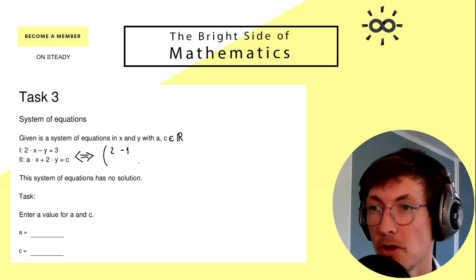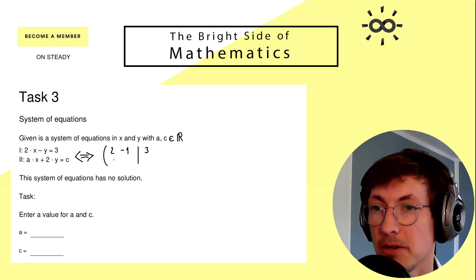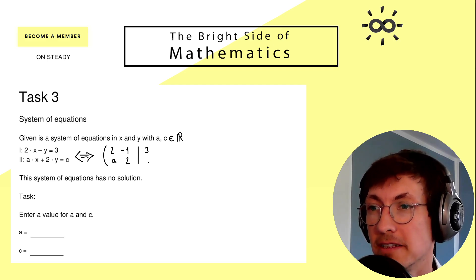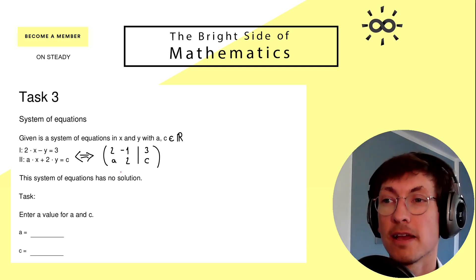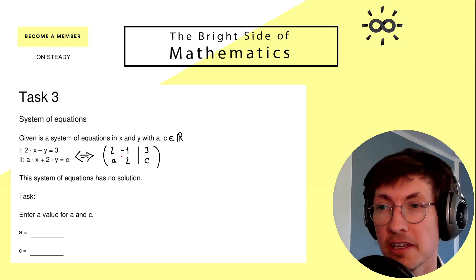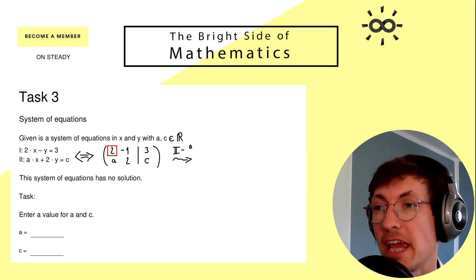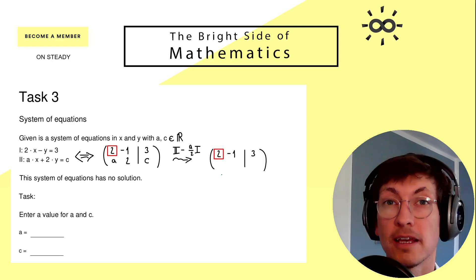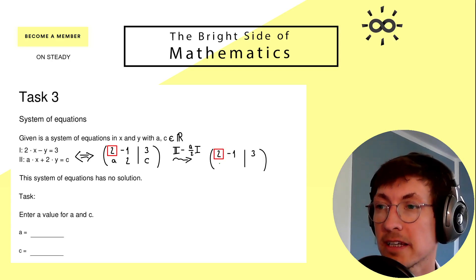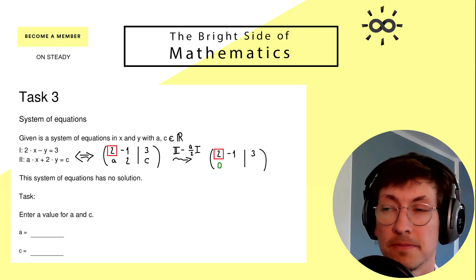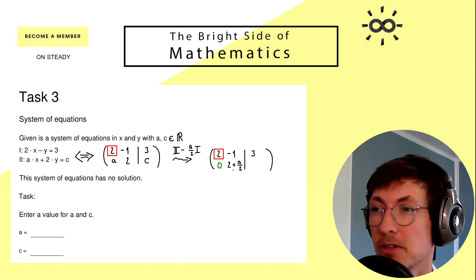So we rewrite the first equation as 2, -1, and 3 on the right-hand side. And here we have a, 2, and c on the right-hand side. Now the Gaussian elimination tells you: use the pivot here to eliminate all numbers below, which just means from the second row we subtract -a/2 times the first row. Indeed, if we do that, we get exactly zero here.